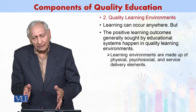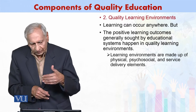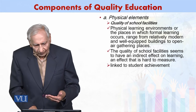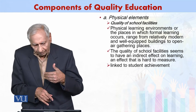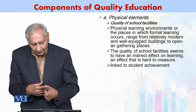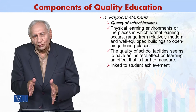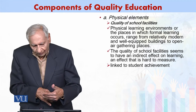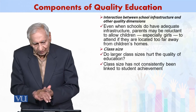The learning environment includes physical infrastructure, psychosocial sectors, service delivery, and physical elements such as rooms, space, and seating arrangement. The quality of facilities available in school affects learning, and on that basis we may make a distinction between one institution and another.